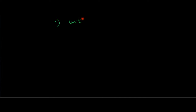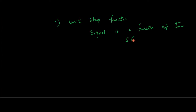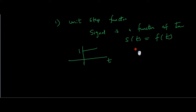We will see some of the elementary signals. First is the unit step function. You can use the terms function and signal interchangeably — they are kind of synonyms when dealing with signals and systems, because a signal is a function of time. The unit step function u(t) has a value of 1 for t greater than 0, and 0 for t less than 0.